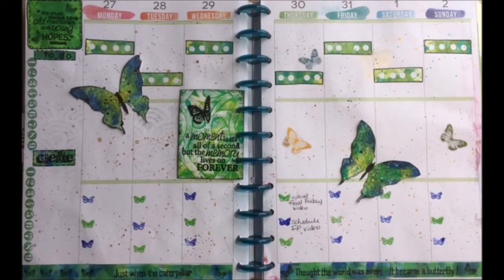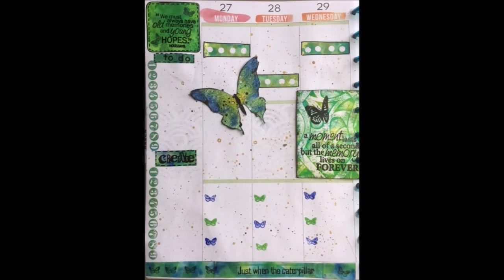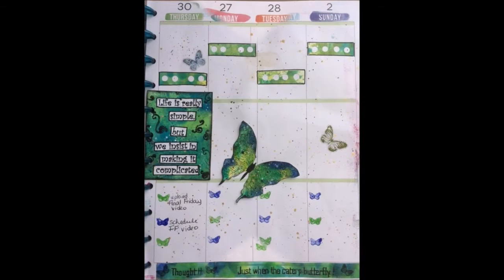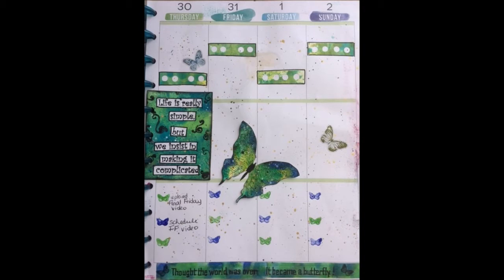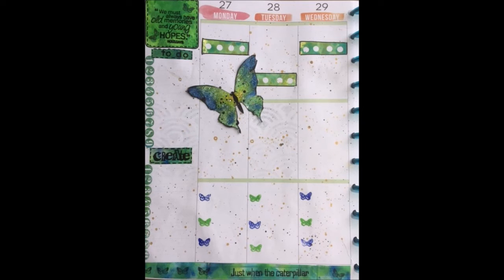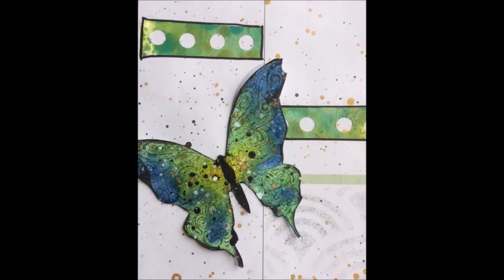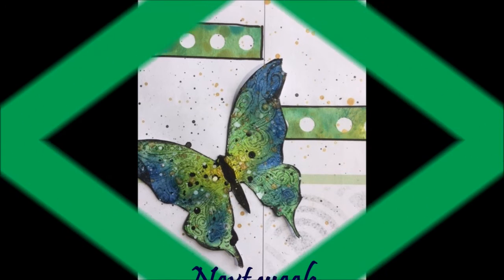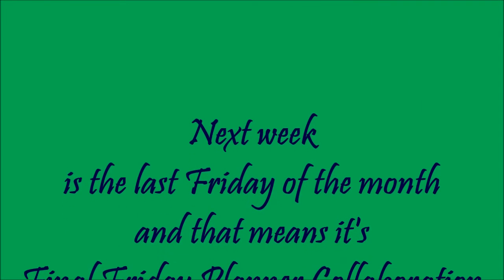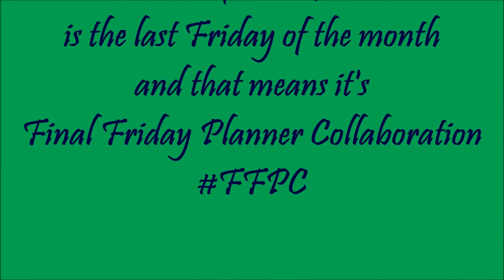Go through your stamps, find some little stamps that you have that you can use for bullets. Also look through those embellishments and see what you can find deep in your stash that you could give new life to in your planner spread. And as always, please come join my Facebook group, All Things Mixed Media Creative Katie. Next week is last Friday of the month. That means it's Final Friday Planner Collaboration.